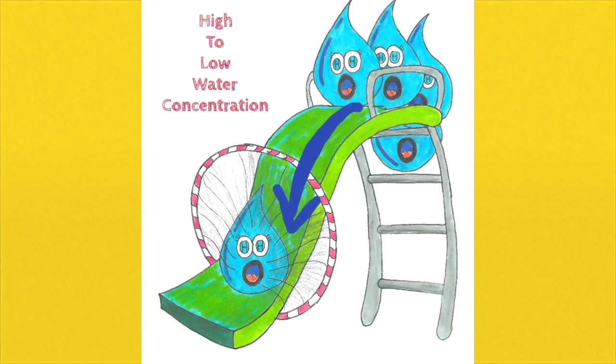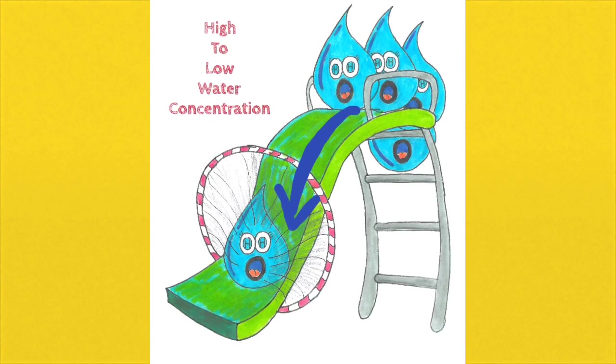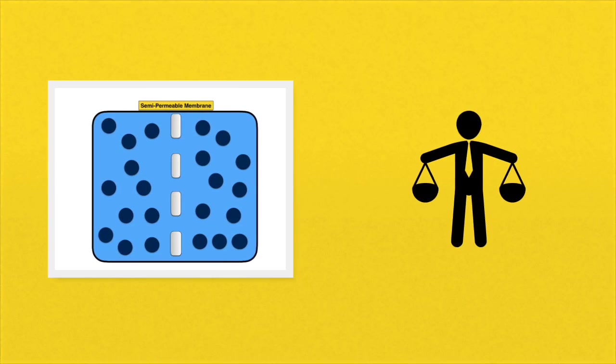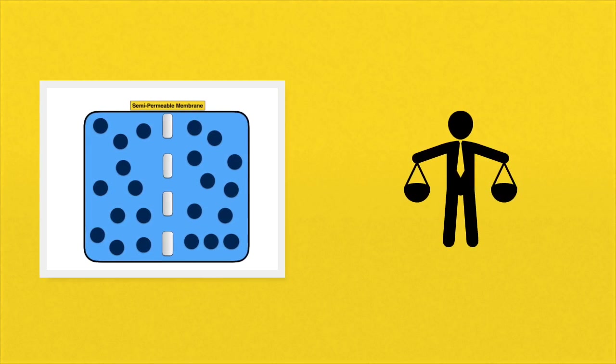Water is going to move from where there is a lot of it to where there is less of it across a semi-permeable membrane. This net movement will continue until the water concentration is balanced either side of the membrane.